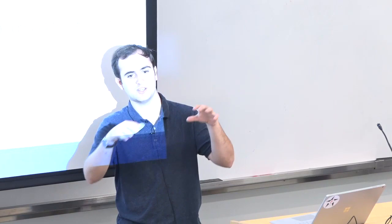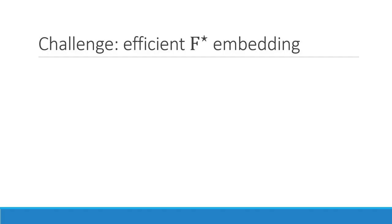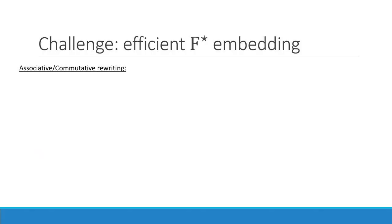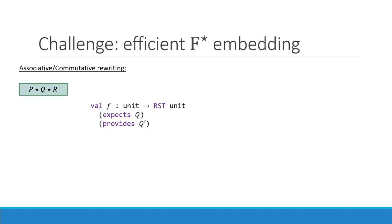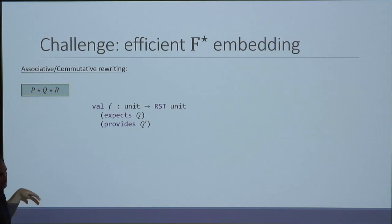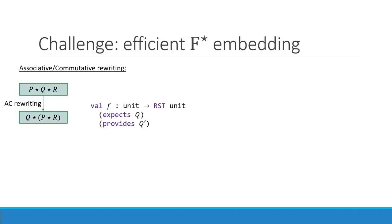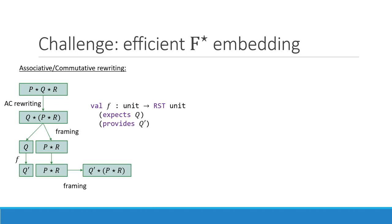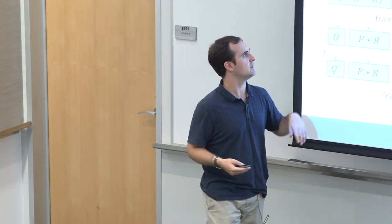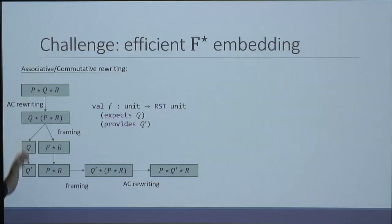That's what allows us to have modularity when reasoning about the heap. But encoding the frame rule and all of that inside F-Star, and reaching a level of automation and usability, has been challenging. For instance, if you have P star Q star R in the context and a function that works on Q and returns Q prime, you want to select Q, perform the computation, then recompose. But you have to prove all these steps — rewrite the term using associativity and commutativity, isolate Q, apply the frame rule, apply F, recompose, and rewrite again. All of these steps have to be proven, and the way to do that with SMT is to explode the context with all possible rewritings, which is not very efficient.